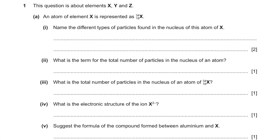Part a. An atom of element X is represented as X₃₄₁₆. Name the different types of particles found in the nucleus of this atom of X. They are protons and neutrons.